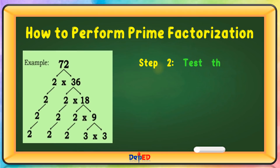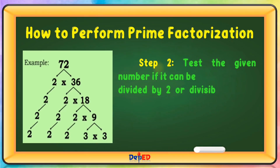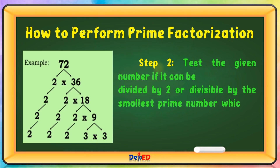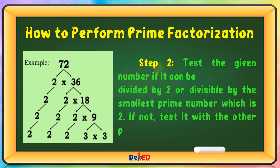Step 2: Test the given number if it can be divided by, or is divisible by, the smallest prime number, which is 2. If not, test it with the other prime numbers, like 3, 5, and so on.